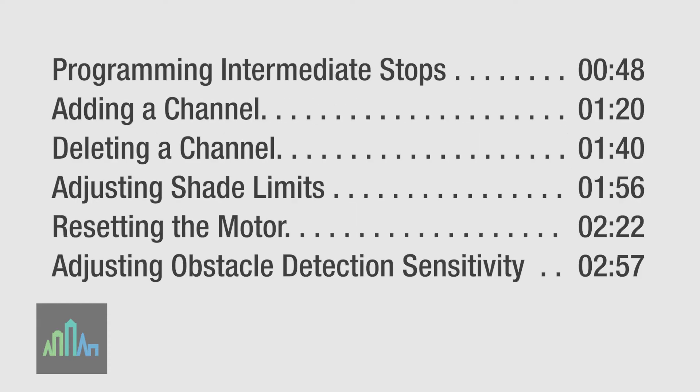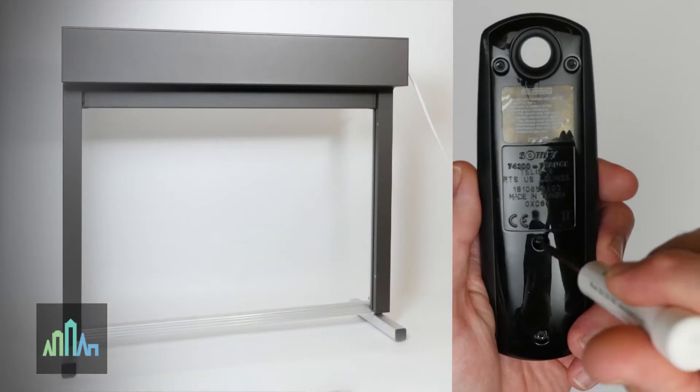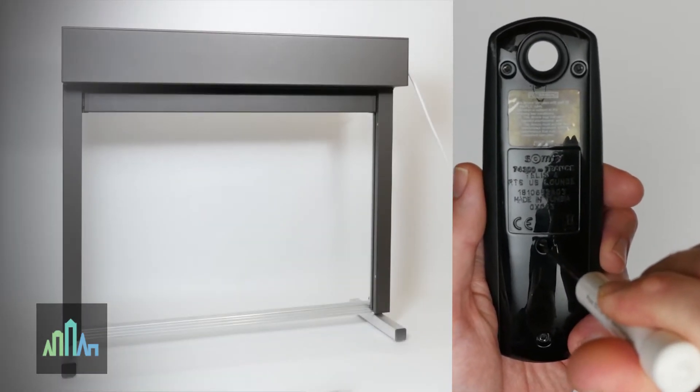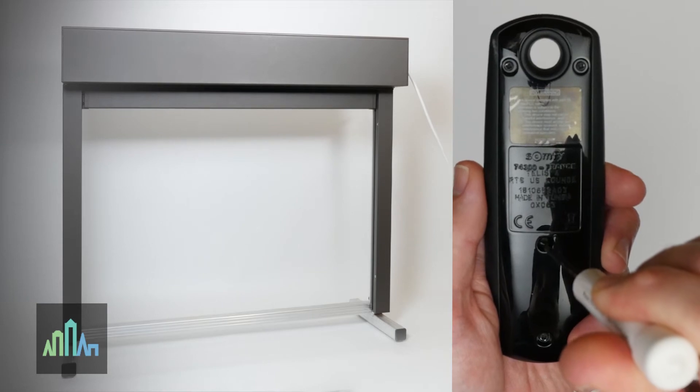If you wish, you can skip ahead to the time codes on screen or use the links in the description below. To put the shade into user mode, press the programming button on the back of the remote until the motor jogs.